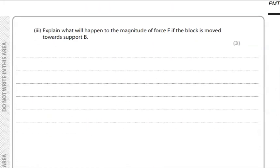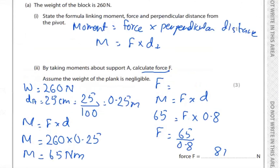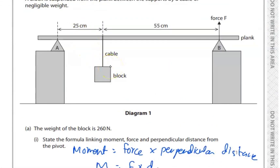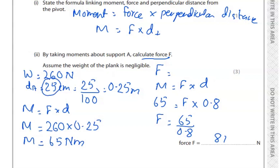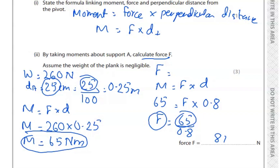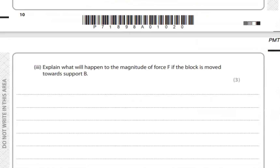Explain what will happen to the magnitude of force if the block is moved towards support B. If the block moves towards support B, we can observe that the distance from A — currently 25 centimetres — will increase. When this distance increases, the moment will also increase, and therefore my force will increase.